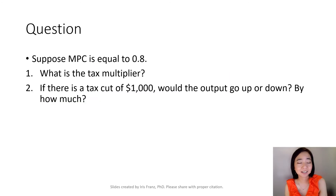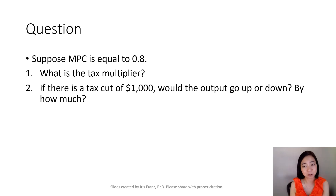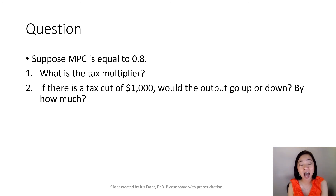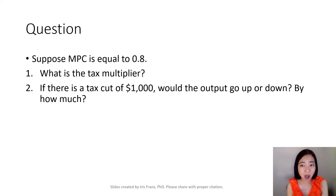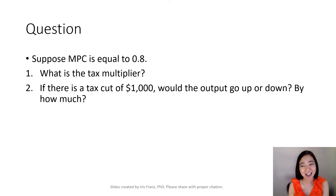Let's try a practice question. Suppose MPC is equal to 0.8. What is the tax multiplier? And if there is a tax cut of $1,000, would output go up or down, and by how much? Pause the video and work on that yourself. Later on, we're going to compare our answers.